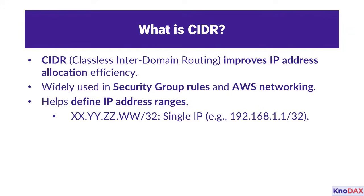CIDR helps define IP address ranges in a concise format. Here are a few examples. The format xx.yy.zz.ww/32 represents a single IP address — for example, 192.168.1.1/32 specifies only that one IP. The format 0.0.0.0/0 represents all IP addresses globally, allowing unrestricted access across the range. While powerful, it should be used cautiously due to security implications.